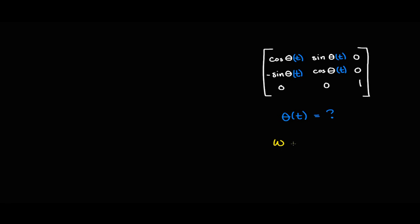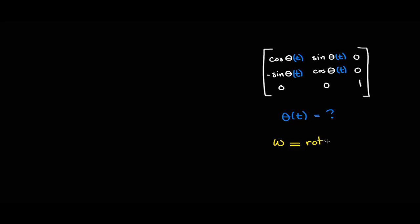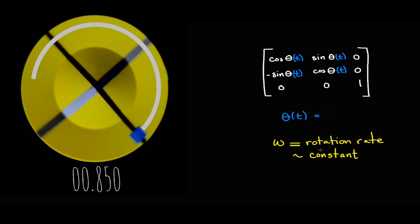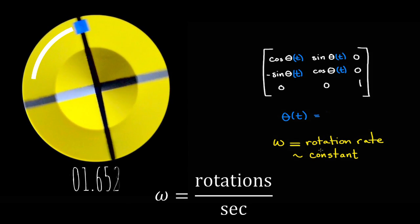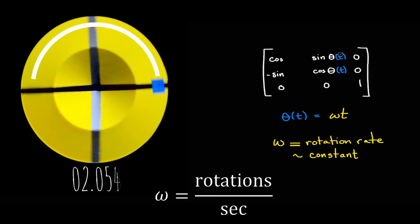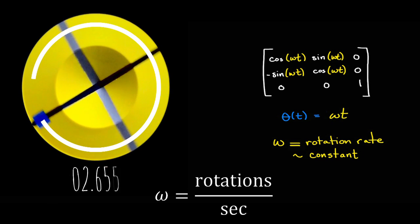But how does it depend on time? To write an explicit function, we need to know the rate, omega, at which the disk is rotating. Assume the disk spins with constant angular velocity. We can easily calculate omega by counting the revolutions per second. And there's our matrix for a spinning, but not wobbling, disk.